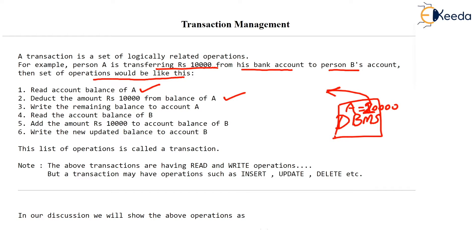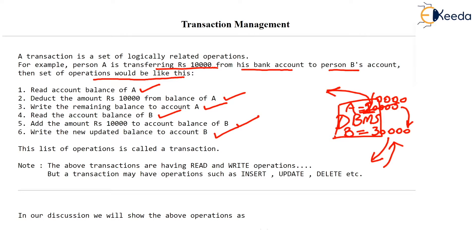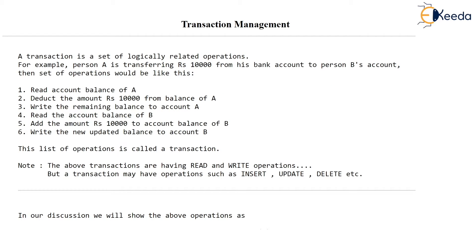Then we write the remaining balance back to account A — so account A has now transferred money and has 10,000 remaining. Then we read the account balance of B. B has a balance of 30,000 initially in the same DBMS store. We add 10,000 rupees to B's balance because A has transferred 10,000 to B's account, making B's balance 40,000, and then write back this 40,000 to B's account. This is a typical transaction. This transaction contains only two kinds of primary operations: read and write.